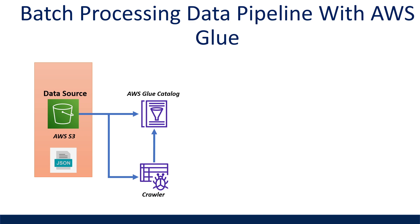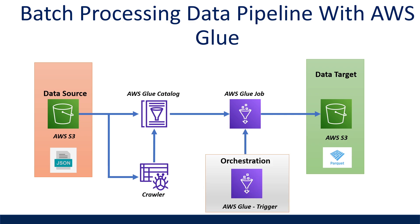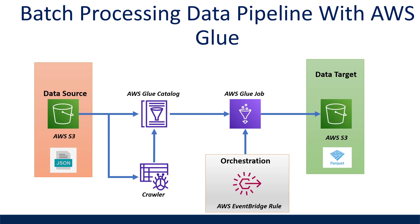Now that our data is populated in the Glue catalog, we can develop an AWS Glue job, which can be written in Python or Scala, to perform whatever transformations you need and write the data to your next processing zone in your data lake. Most of the development time as a data engineer would be spent developing your AWS Glue job. The target could be anything — for example, an RDS database or AWS Redshift — but here I chose an S3 bucket with the file format being Parquet, which would be another zone in your data lake such as a curated or processed zone. We'll probably want this to run on a schedule or trigger on events. AWS Glue supports native orchestration, and you can also use an AWS EventBridge rule to orchestrate your Glue jobs.